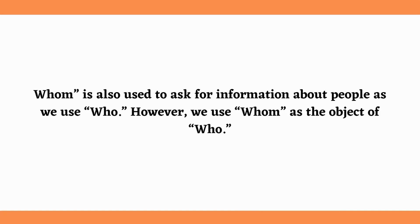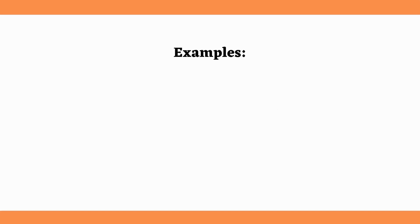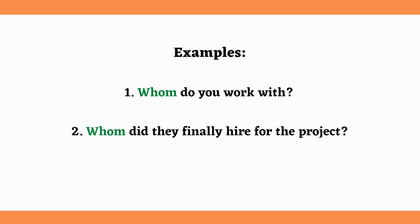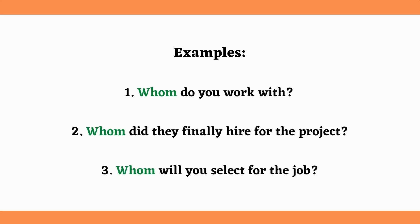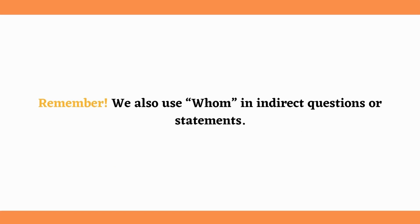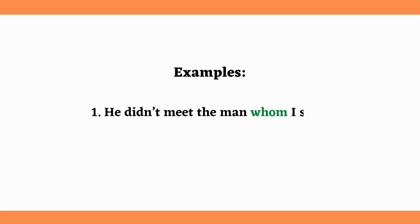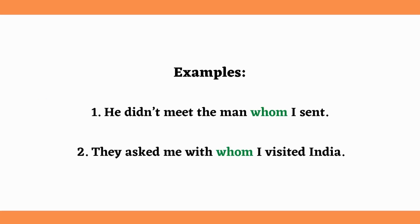The next WH word is 'Whom.' 'Whom' is also used to ask for information about people, as we use 'who.' However, we use 'whom' as the object of 'who.' For example: Whom do you work with? Whom did they finally hire for the project? Whom will you select for the job? Remember, we also use 'whom' in indirect questions or statements. For example: He didn't meet the man whom I sent. They asked me with whom I visited India.